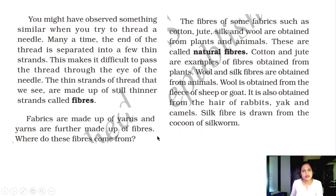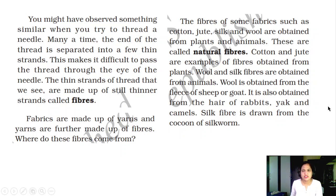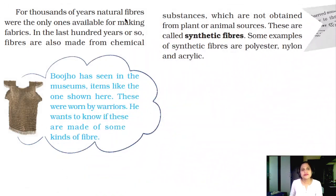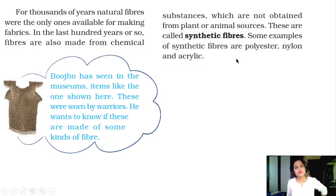Fabrics are made up of yarns, and yarns are further made up of fibers. The fibers of some fabrics such as cotton, jute, silk and wool are obtained from plants and animals — these are called natural fibers. Cotton and jute are examples of fibers obtained from plants. Wool and silk fibers are obtained from animals. Wool is obtained from the fleece of sheep or goat, and also from the hair of rabbits, yak and camels. Silk fiber is drawn from the cocoon of the silkworm. In the last hundred years, fibers are also made from chemical substances not obtained from plant or animal sources — these are called synthetic fibers. Some examples of synthetic fibers are polyester, nylon and acrylic.